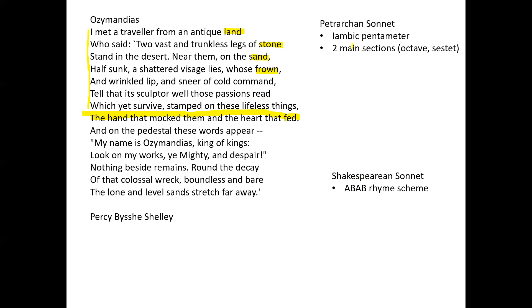So there we have two elements of two different sonnets. The third thing we see is the way Shelley chooses to end his sonnet. Normally, in a Shakespearean sonnet, the last two lines would be a rhyming couplet — and that doesn't exist here either. So what you've got is Shelley playing around with form, deliberately borrowing from two different types of sonnet, but also throwing his own version into the mix as well.